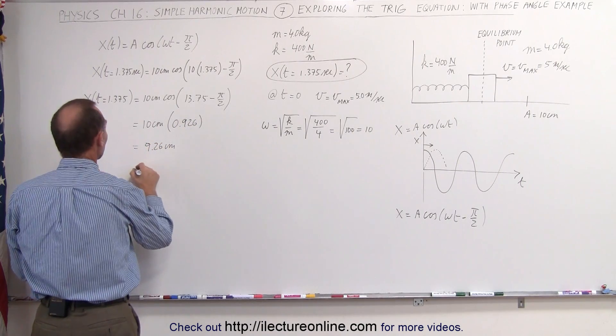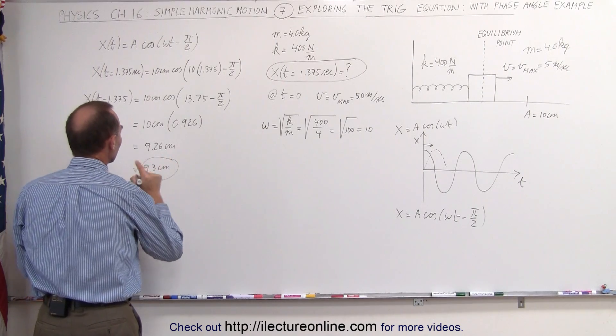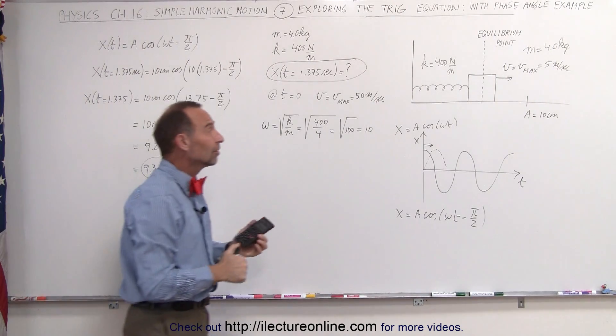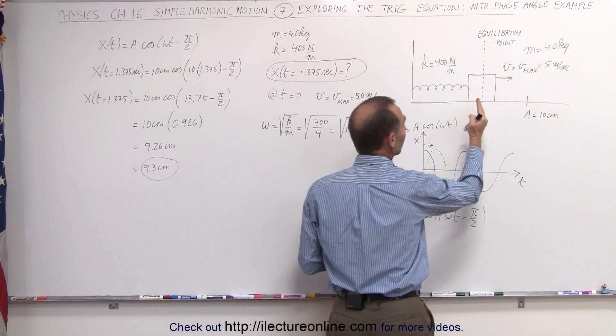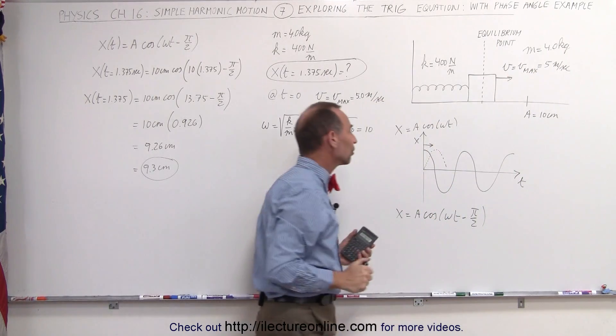Rounding off to two significant figures that would be 9.3 centimeters, which would be the position of the block 1.375 seconds after the clock started, and the clock started the moment that the block was moving to the right at 5 meters per second.